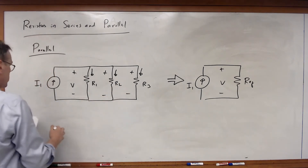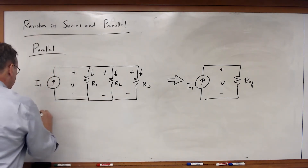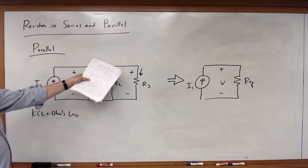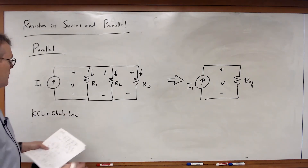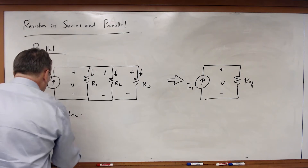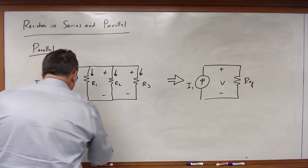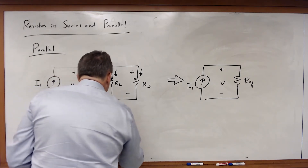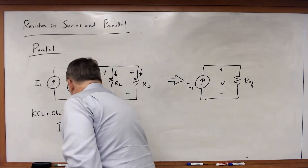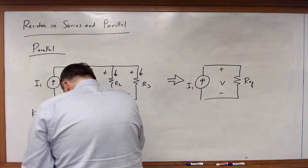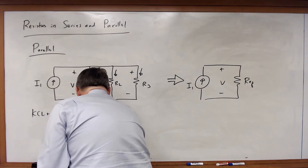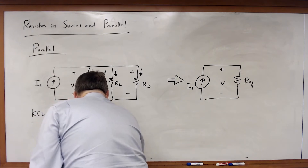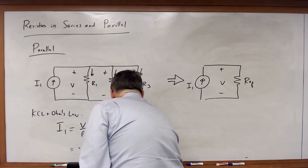Writing KCL plus Ohm's law at the top or bottom node gives the same answer either way. The current I1 going in equals V over R1 plus V over R2 plus V over R3, which can be grouped as V times the quantity 1 over R1 plus 1 over R2 plus 1 over R3.